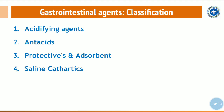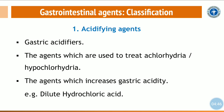The classification of inorganic gastrointestinal agents: Class 1 is acidifying agents, Class 2 is antacids, Class 3 is protectives and adsorbents, and Class 4 is saline cathartics. Acidifying agents are also called gastric acidifiers — agents used to treat achlorhydria or hypochlorhydria by increasing gastric acidity. An example is dilute hydrochloric acid.